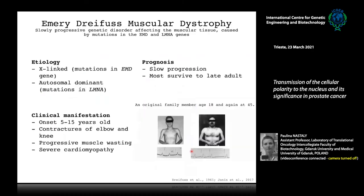The last part of this project relates to Emery-Dreifuss muscular dystrophy, a disease caused by mutations in the emerin-encoding gene. It is characterized by slow progression, with patients experiencing progressive muscle wasting and typically dying around age 40-50 from cardiomyopathy.